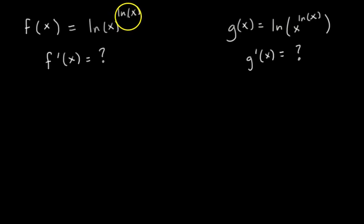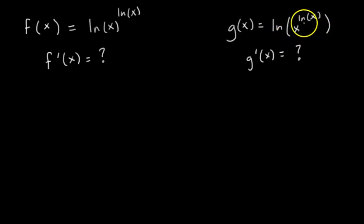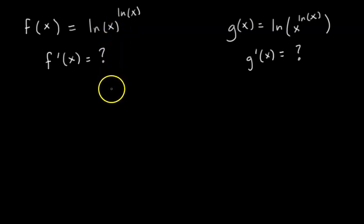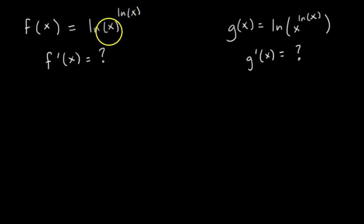In f of x, the exponent ln of x is not inside the argument of the bottom ln of x — not inside these two parentheses — whereas in g of x, the exponent ln of x is inside the parentheses, and that's the only difference. Trust me, they're not the same thing. So what's wrong with just using the power rule? In the same way that x cubed gets differentiated into 3 times x squared, why can't we bring ln of x down in front and decrement the exponent by 1? The answer is that the power rule only applies when x is raised to a constant — that's the only situation in which you can use it.